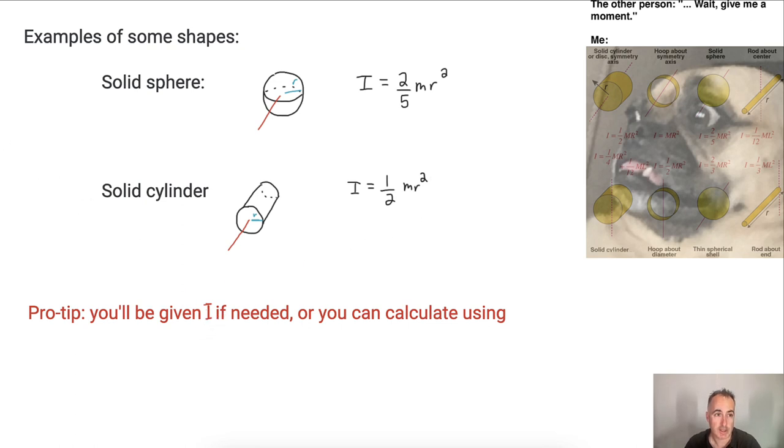So two-fifths mr squared, for example, whereas a solid cylinder, well, that's going to be different. And again, you don't have to memorize these, you'll be given these if you need them. So a solid cylinder rotating around this axis right here, it's going to be one-half mr squared. So there we go. And so on and so on. So they could give you whatever shape they wanted. And you'll just be told what the moment of inertia is. Now, if you're not told, then you do have to use that equation, you know, I equals sigma, which means add up all the and then mr squared.